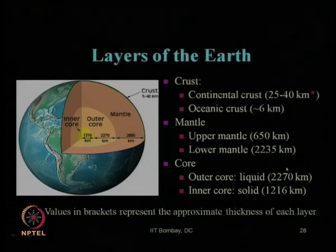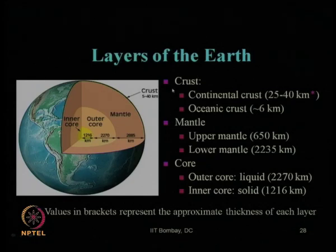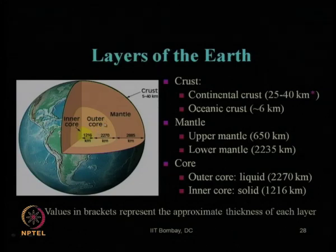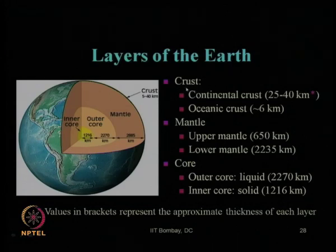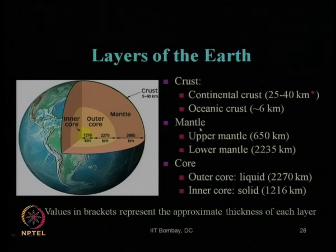A very quick recap of what we have learnt in the previous lecture: layers of earth, which is basically subdivided into three major zones — crust, mantle, and core — with their individual typical thickness. We have seen the outer core is in a fully fluidized state and the inner core is in a fully solid state. We also learnt that the majority of earthquakes occur within a depth of up to the upper mantle thickness, that is about 700 kilometers from the ground surface, and shallow earthquakes occur mostly within the crustal plate.